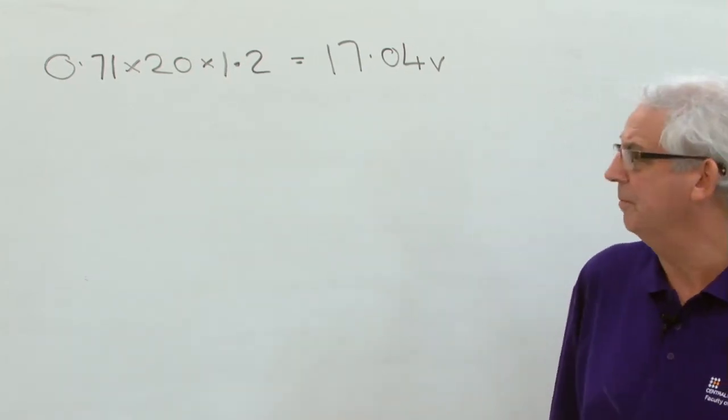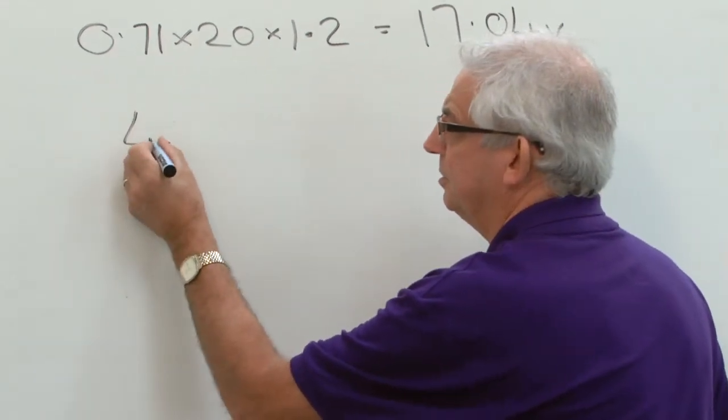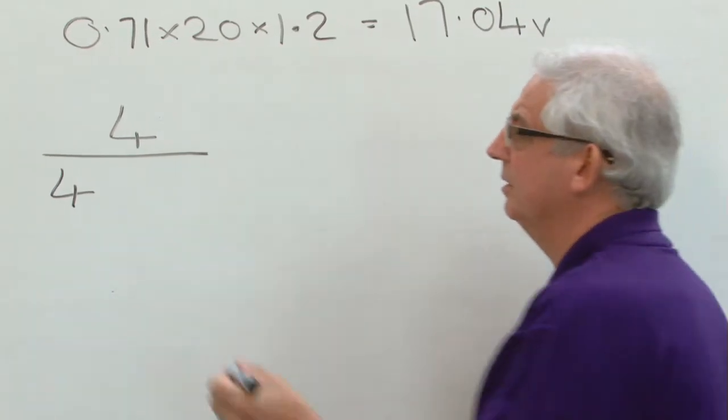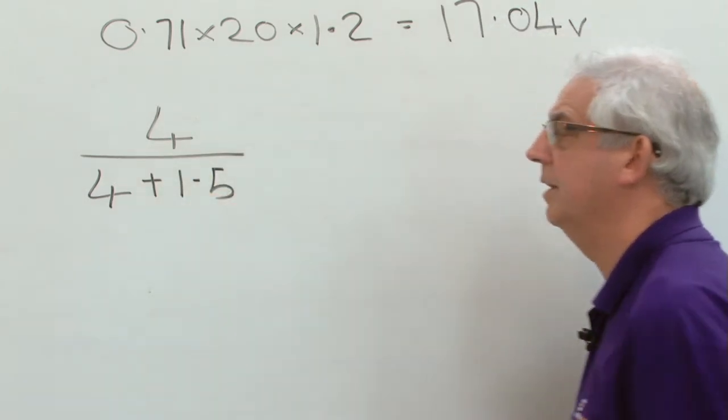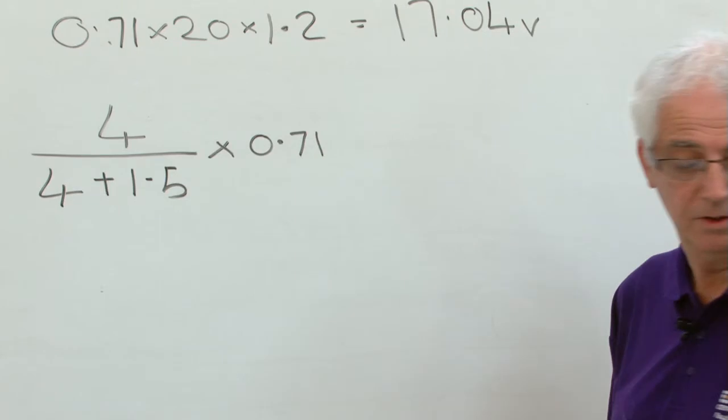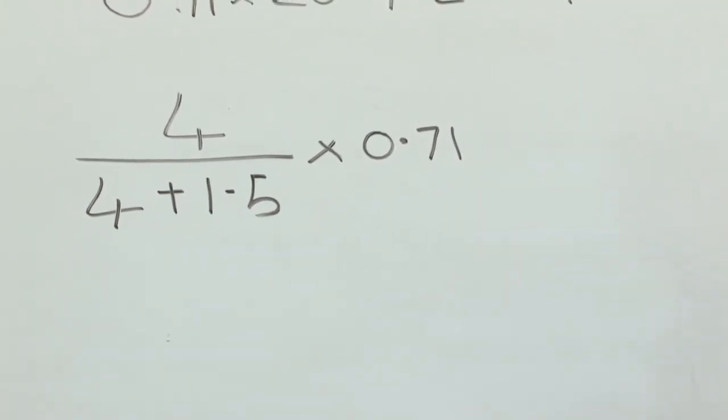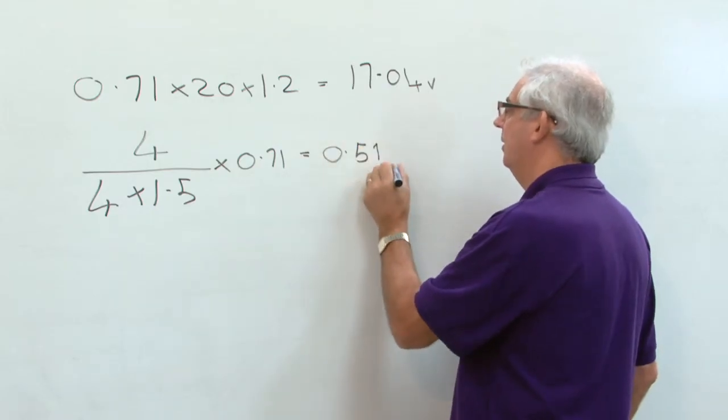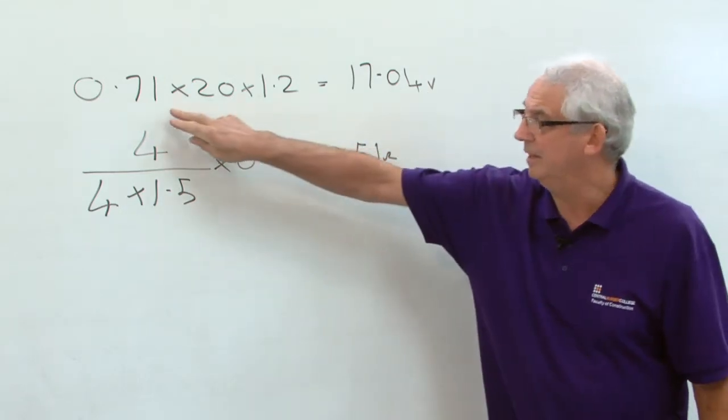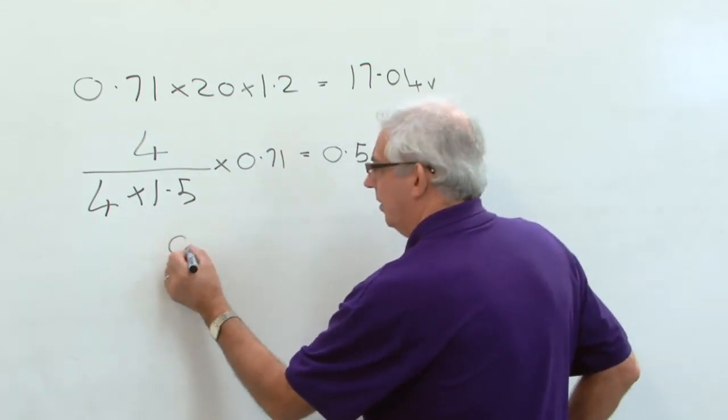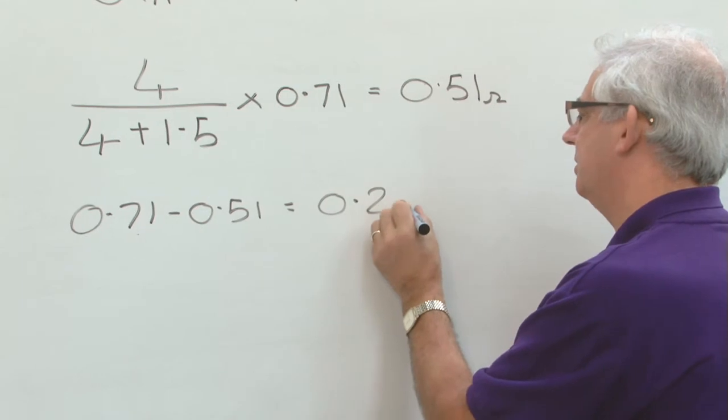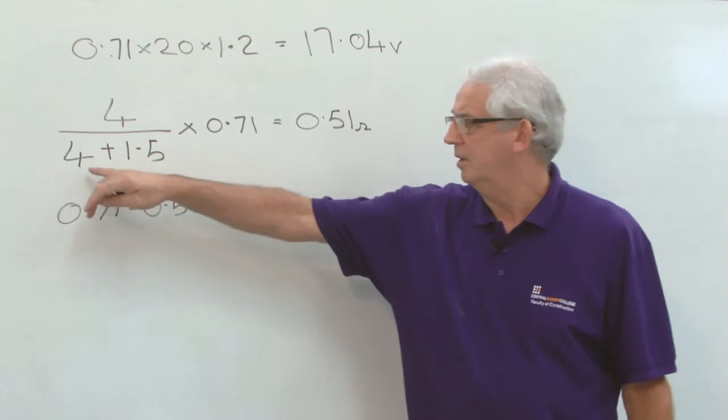It's quite a simple calculation, all I need to do is to divide the cross-sectional area of the live conductor or line conductor by the cross-sectional area of the line conductor plus CPC. I then need to multiply it by my R1 and R2 value which I've got there. That's going to come out at around 0.51 ohms. This 0.51 ohms is the resistance of my CPC in this circuit. If I have an R1 and R2 of 0.71 and I take away 0.51, it gives me a resistance value of 0.2. 0.2 will be the resistance value of my line conductor.